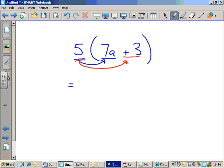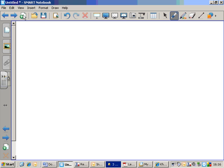So, five times seven A. Five lots of seven are thirty-five, so five lots of seven A is thirty-five A. And five lots of positive three. Five threes are fifteen, plus fifteen. There we go, we're done.